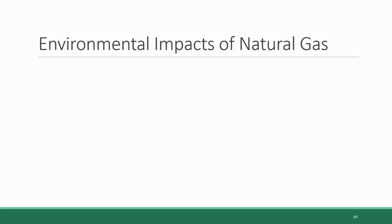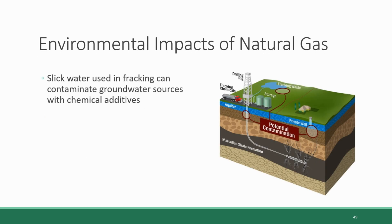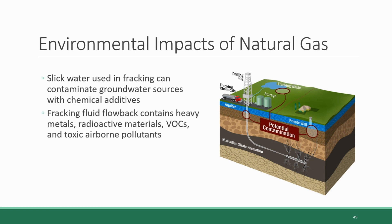Like with coal and oil, there are multiple environmental impacts brought on by the drilling and combustion of natural gas. A big one is contamination. The slick water used in fracking can contaminate groundwater sources with its chemical additives. Additionally, the fracking fluid flowback — the slick water withdrawn back out of the well — contains a number of contaminants from underground, including heavy metals, radioactive material, volatile organic compounds, and toxic airborne pollutants.